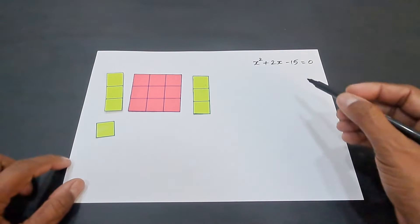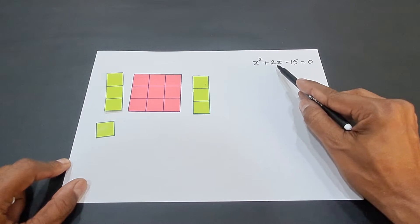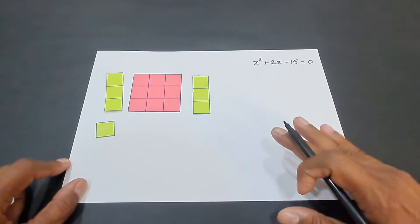We will be finding the roots of this quadratic equation x² + 2x - 15 = 0 using this activity.